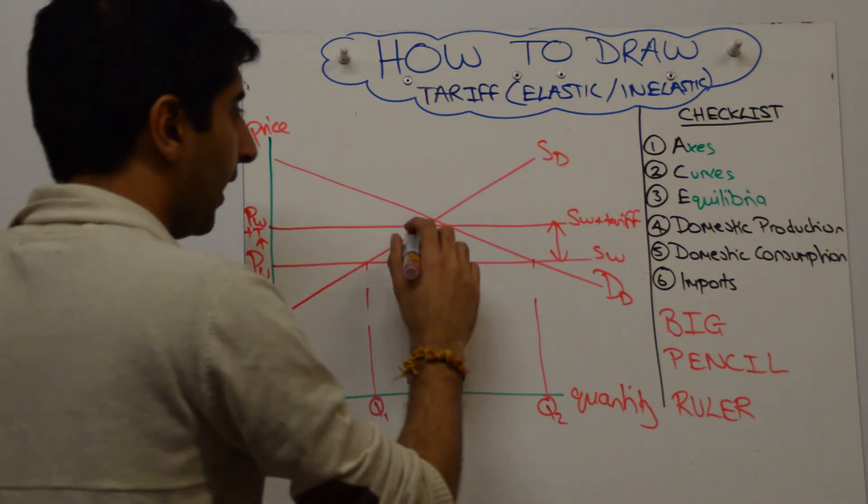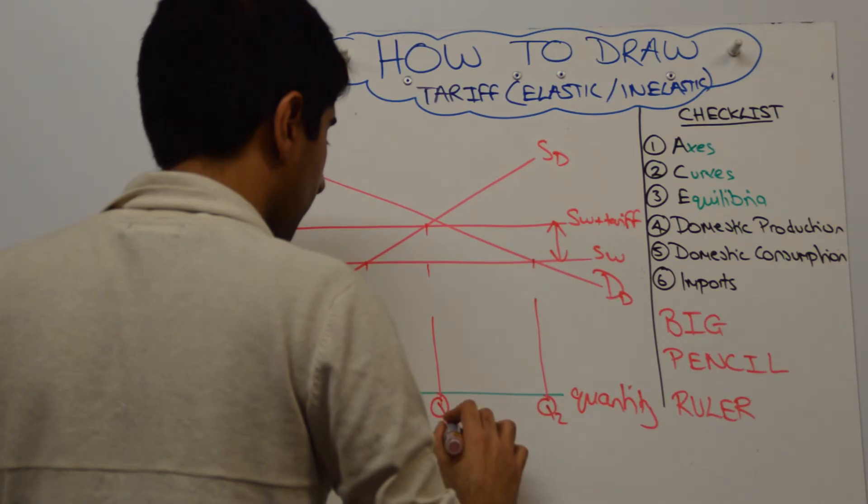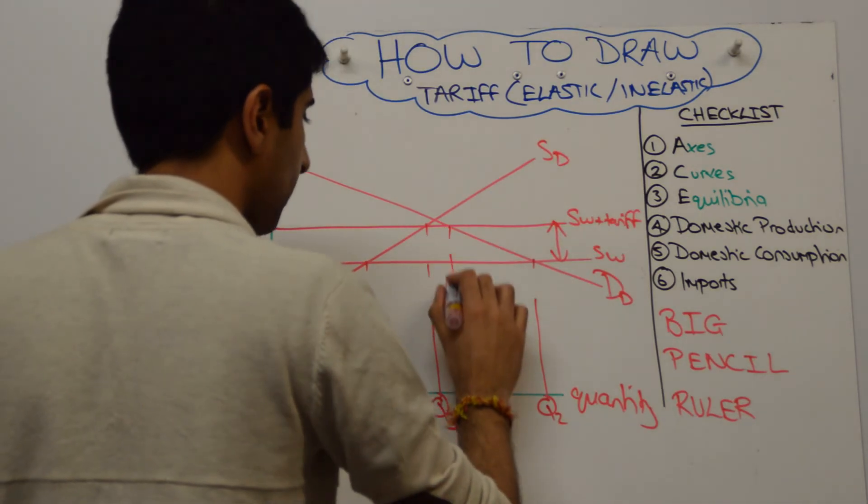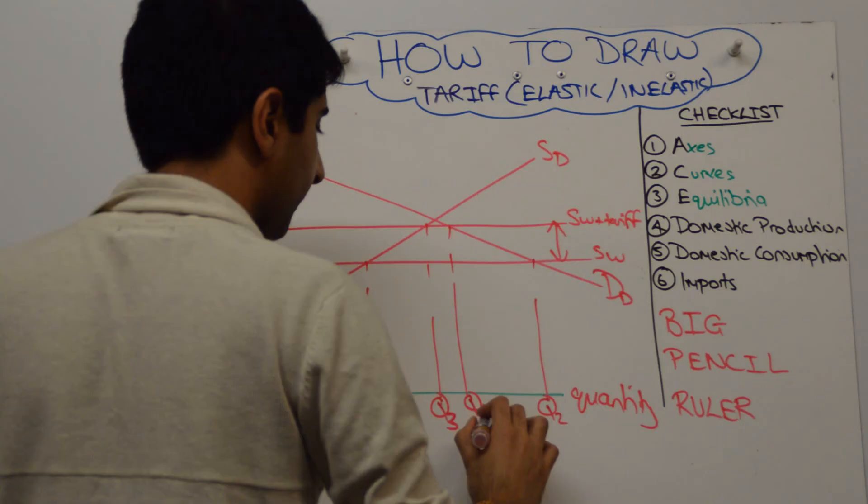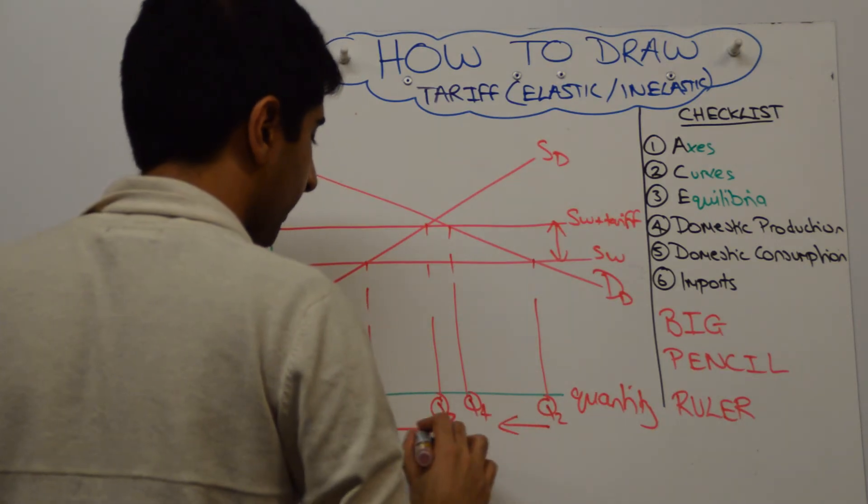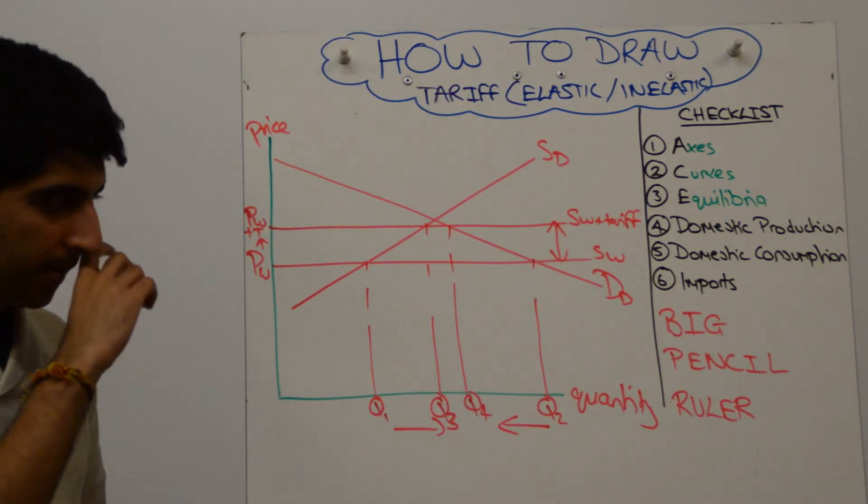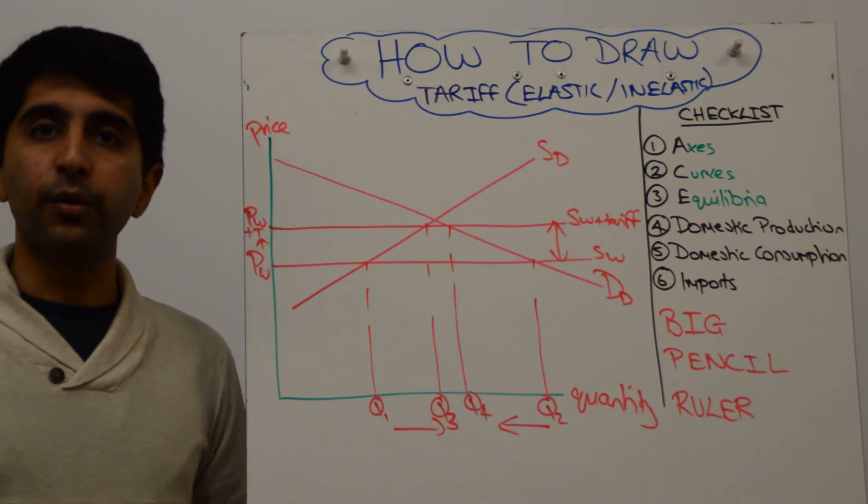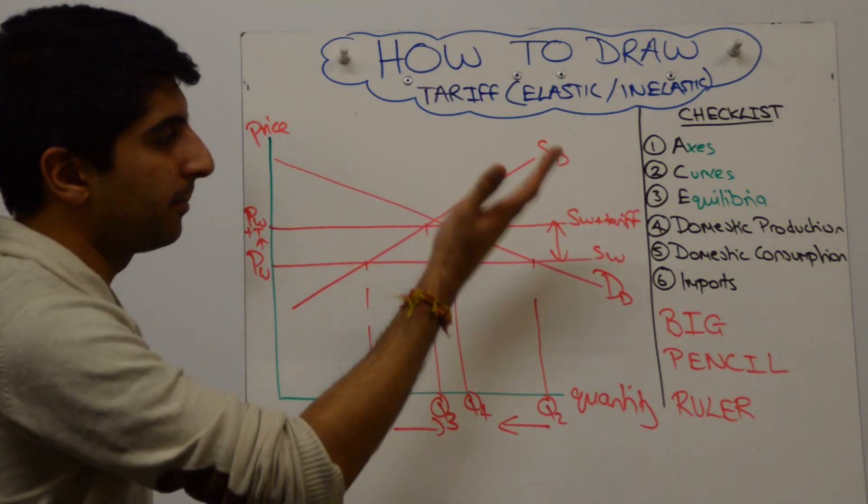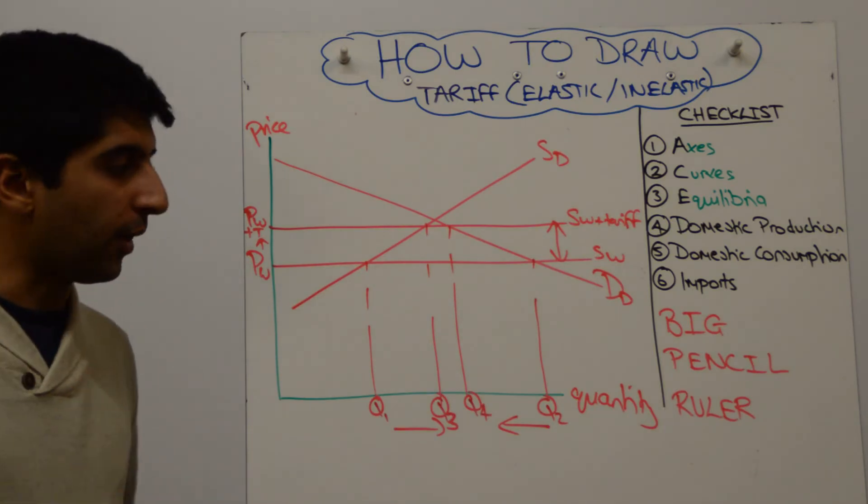What we see now is, as usual, the increase in domestic production from Q1 to Q3, and the reduction in domestic demand from Q2 to Q4. And the point we're trying to make here is that the squeeze of imports is much more significant when demand and supply are drawn much more price elastic, much shallower.